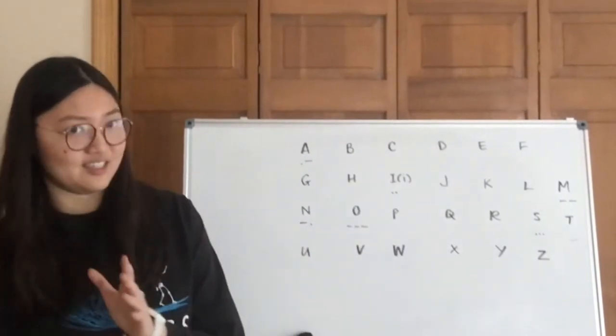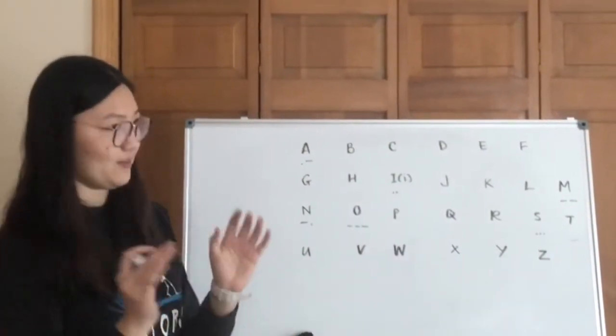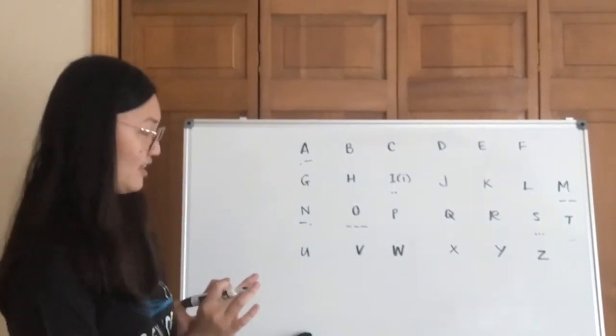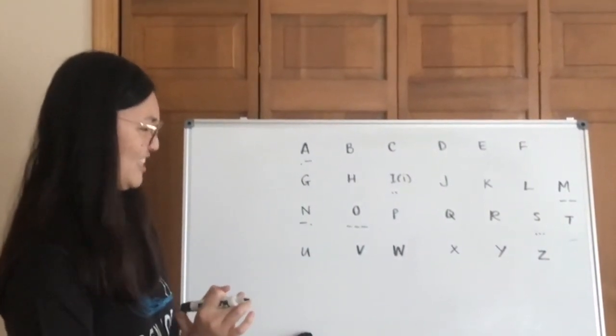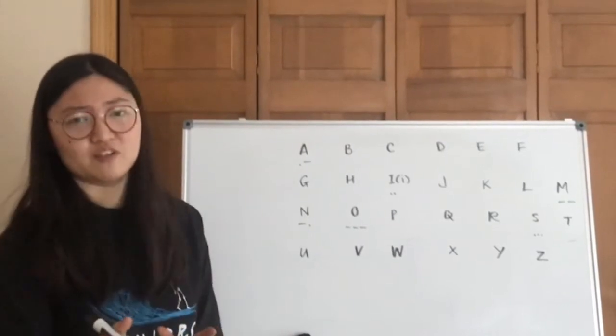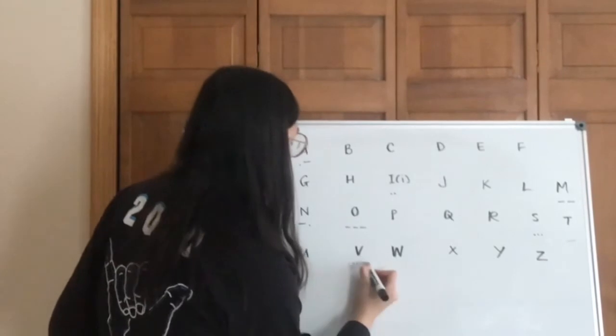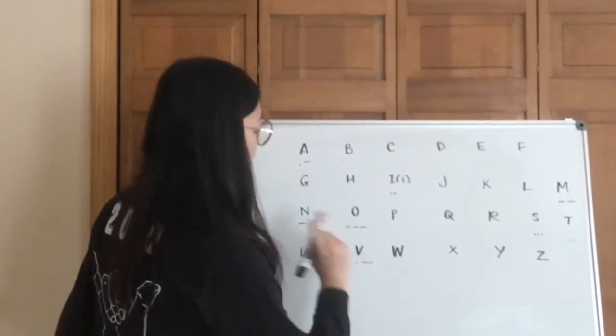So it starts as a da da da da. So think about V as in victory, and I'm pretty sure that was the beginning of Pathétique. Correct me if I'm wrong. Anyway, so it's going to be da da da da. Short, short, short, long.